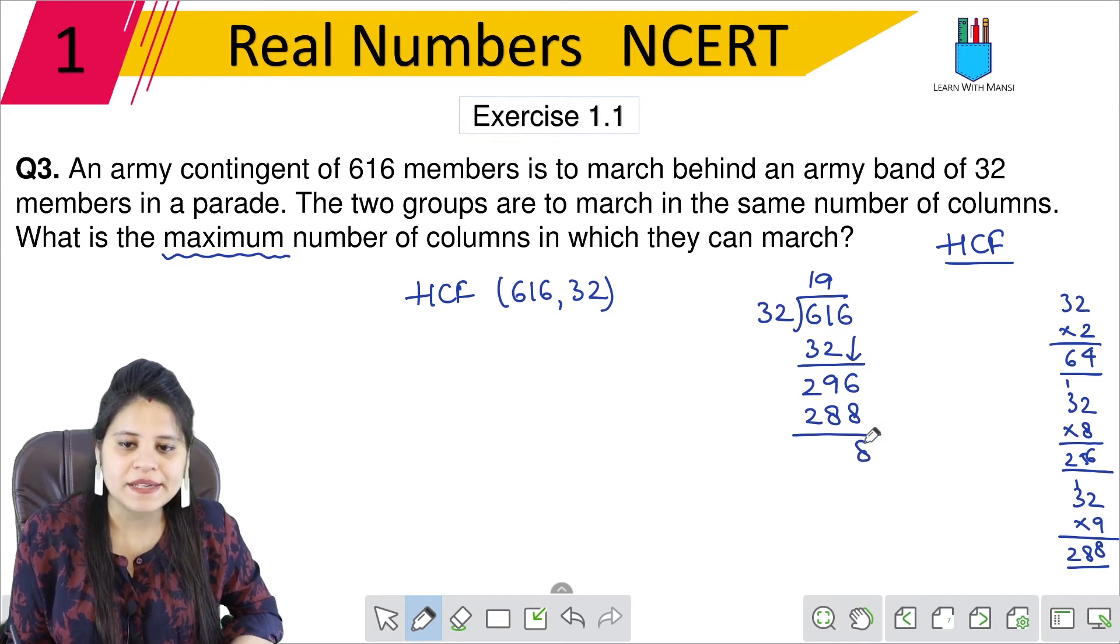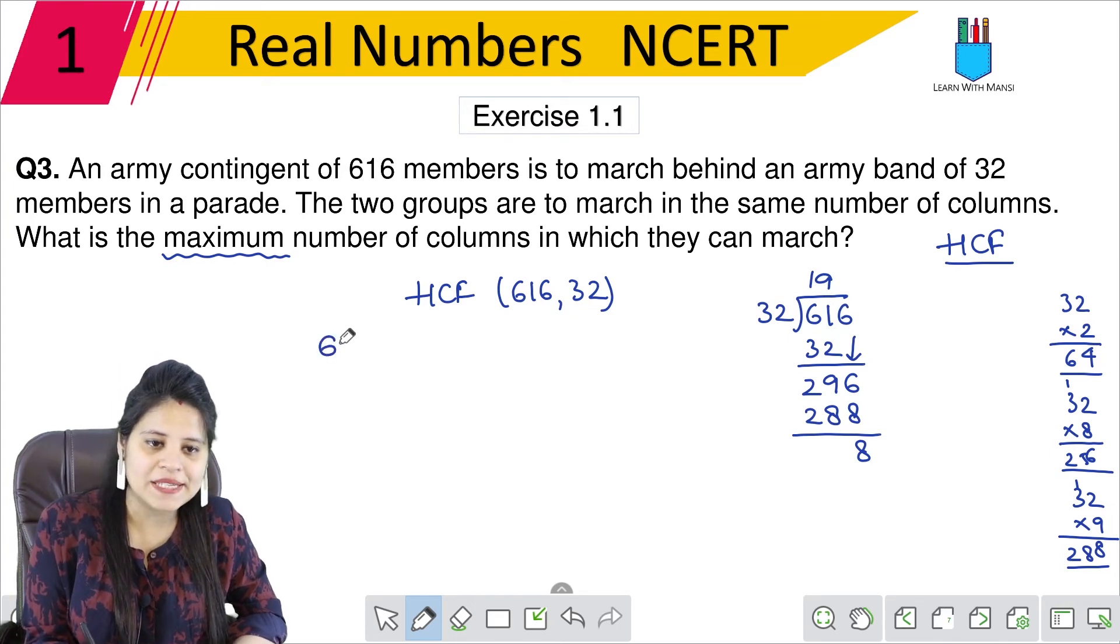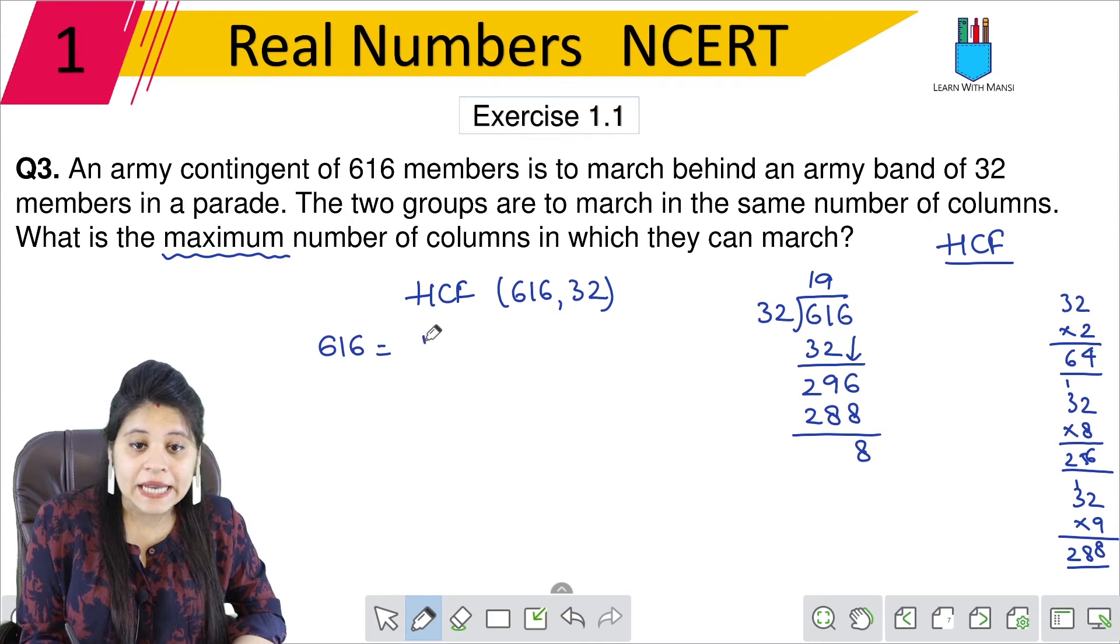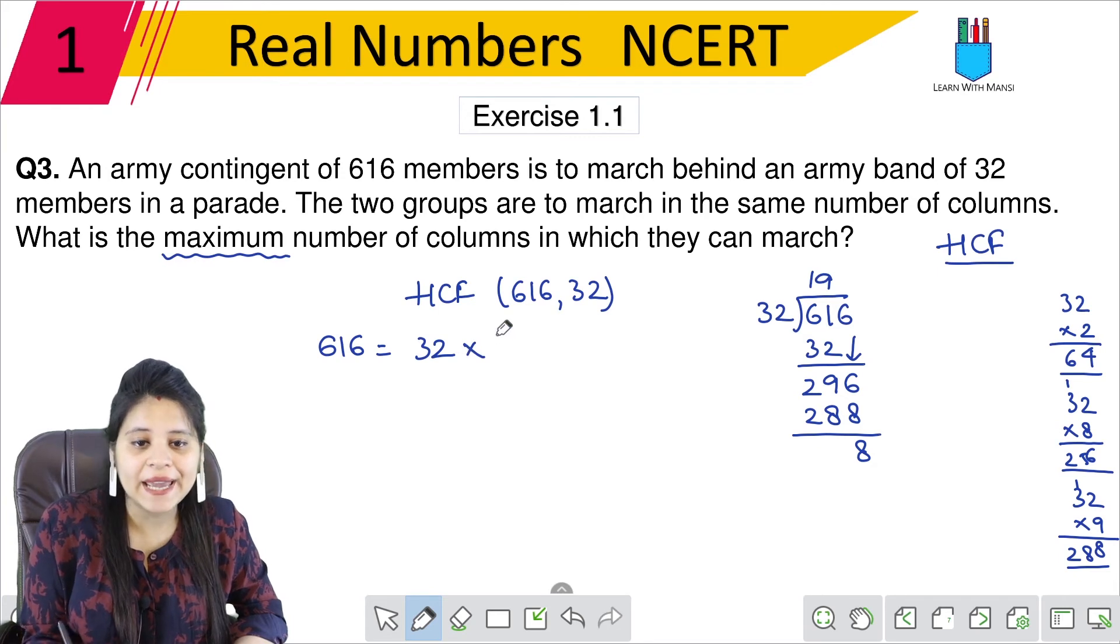So we will do it from 9. So we will get 288. So we have 16. We have 8 minus 8. We have 8. So we can write here, we have 616 equals 32 into 19 plus 8.